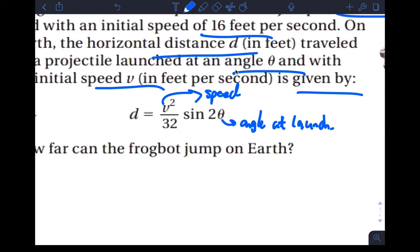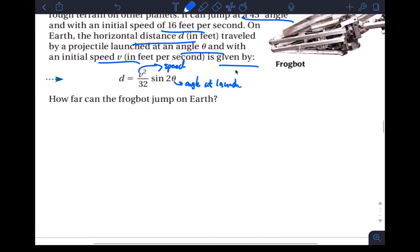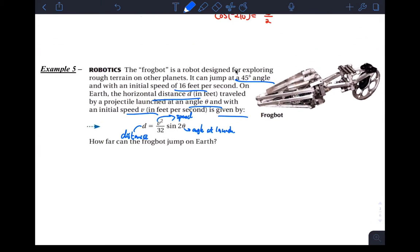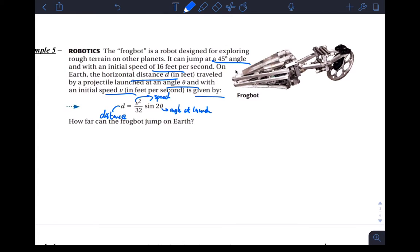And how far, give me the distance, this is distance. How far can the robot jump? I'm not really too much of a fan of this exercise, but okay, you just substitute your numbers. So speed here is 16 feet per second, angle is 45 degrees. So you just say d equals 16 feet per second squared over 32 times the sine of two times theta, and the angle here is 45 degrees.